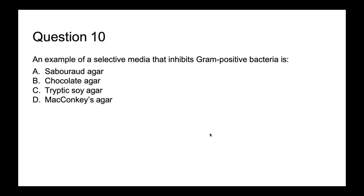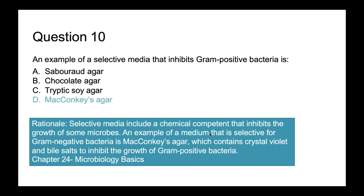Question ten: An example of selective media that inhibits gram-positive bacteria is A, Sabouraud agar; B, chocolate agar; C, trypticase soy agar; or D, MacConkey's agar. The answer is D — MacConkey's agar. Selective media contains a chemical component that inhibits growth of some microbes. MacConkey's agar contains crystal violet and bile salts to inhibit the growth of gram-positive bacteria, making it selective for gram-negative bacteria.